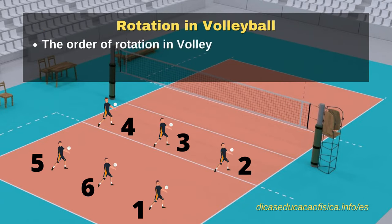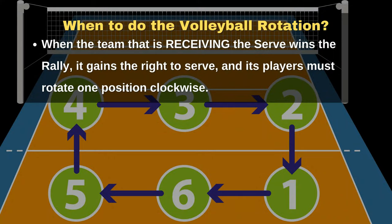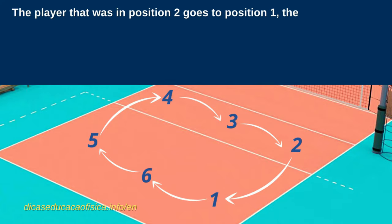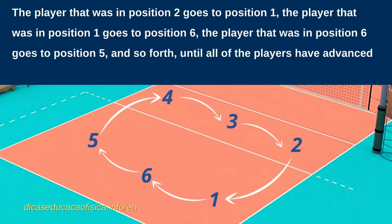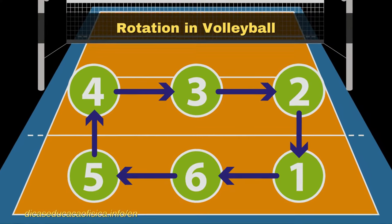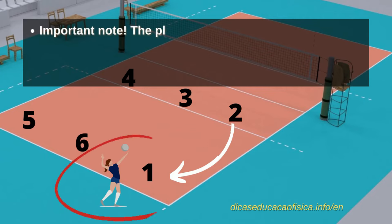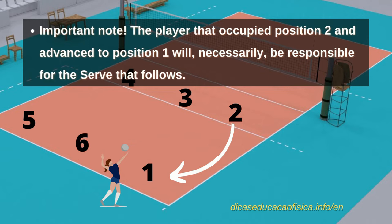Rotation in volleyball. The order of rotation is defined by the team's starting lineup in each set. When the team that is receiving the serve wins the rally, it gains the right to serve, and its players must rotate one position clockwise. The player in position 2 goes to position 1, position 1 goes to position 6, position 6 goes to position 5, and so forth, until all players have advanced one position clockwise. The player that occupied position 2 and advanced to position 1 will necessarily be responsible for the serve that follows.